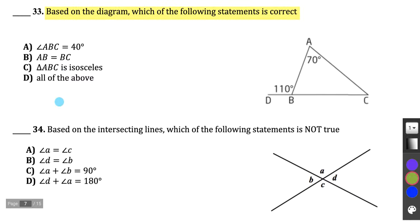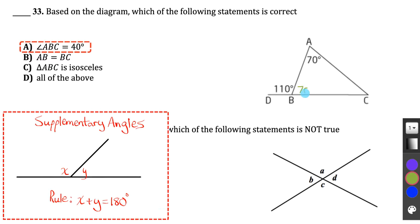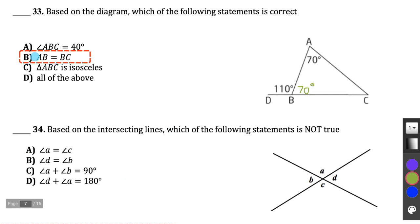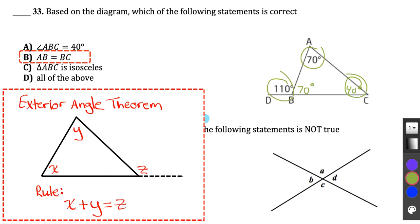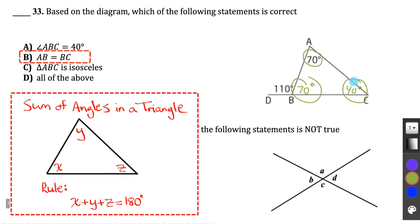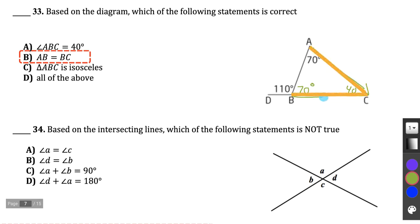Question 33: Based on the diagram, which statement is correct? Angle ABC — going from A to B to C — is supplementary with the 110-degree angle, so it's 70 degrees, not 40. AB equals BC? Using the exterior angle theorem, the missing angle is 40 degrees, making the triangle isosceles with AC and BC equal, not AB and BC. Triangle ABC is isosceles — yes, it has two equivalent angles. Answer C.